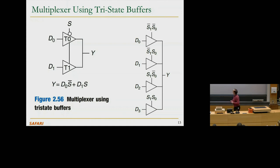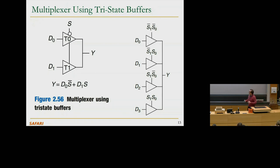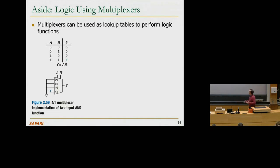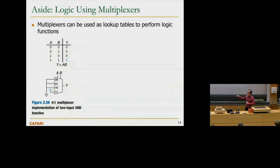Combinational logic elements can be interesting for other purposes. You can use a multiplexer as a lookup table to perform logic functions. For example, an AND gate truth table can be implemented using a 4-to-1 multiplexer. This multiplexer has four data inputs and two select signals. If you hardwire the first three inputs to 0 and the last data input to 1, depending on the values of A and B as select inputs, you select one of those hardwired values.